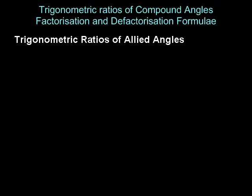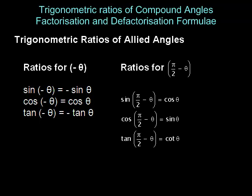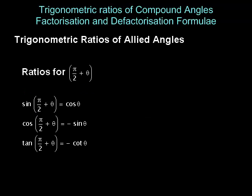The trigonometric ratios for the allied angles are shown in the following tables. Sine of minus theta is minus sine theta, cos of minus theta is cos theta, tan of minus theta is minus tan theta. Sine of pi by two minus theta is cos theta, cos of pi by two minus theta is sin theta, tan of pi by two minus theta is cot theta. Sine of pi by two plus theta is cos theta, cos of pi by two plus theta is minus sin theta, tan of pi by two plus theta is minus cot theta.